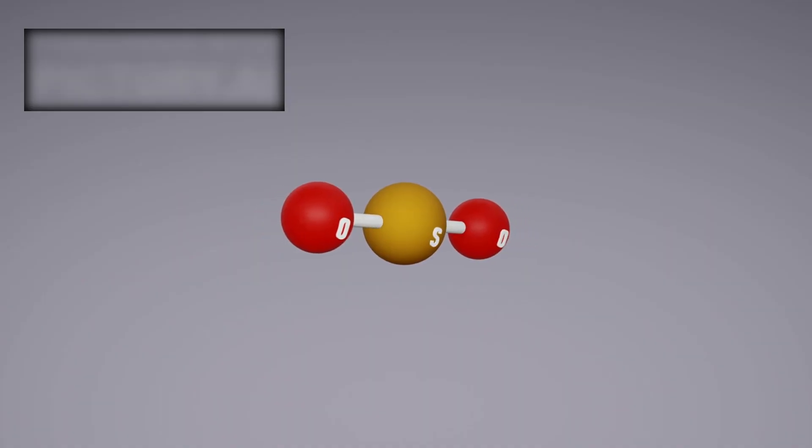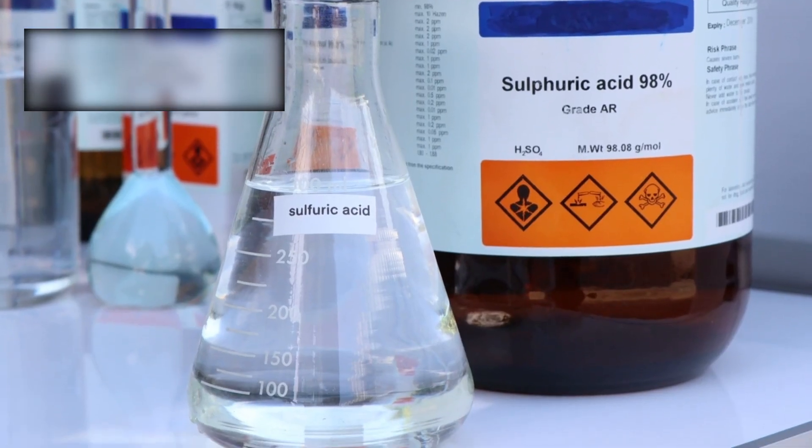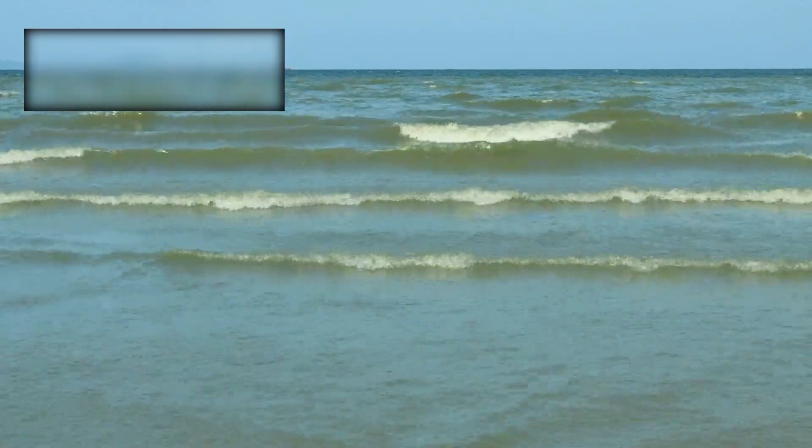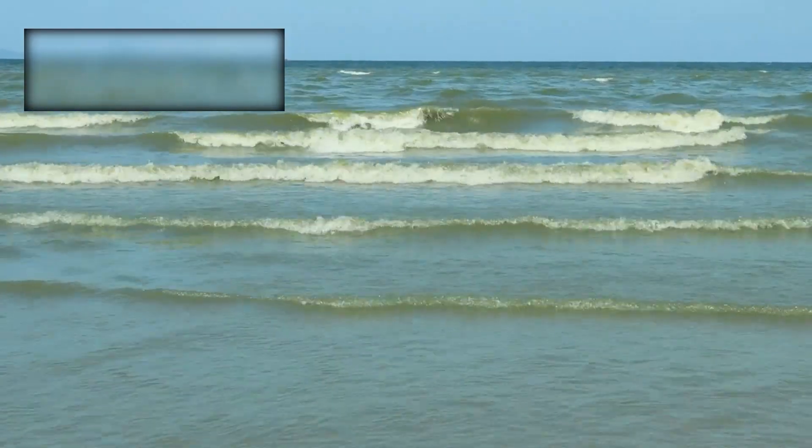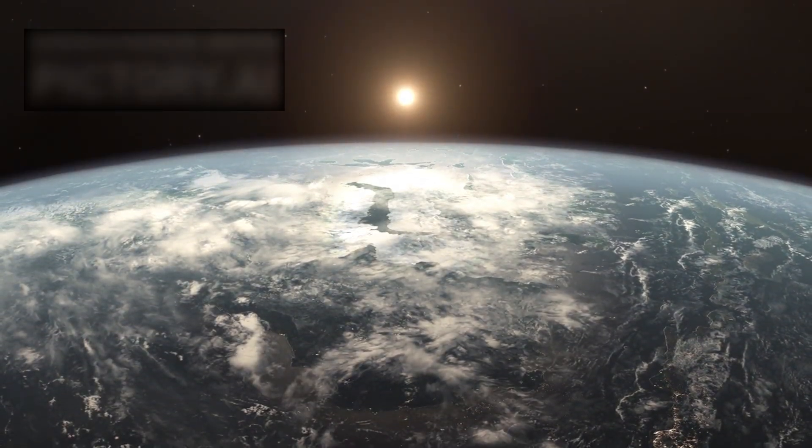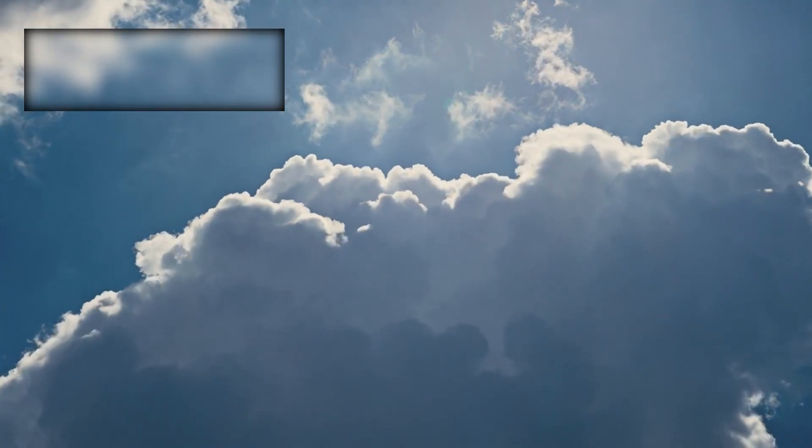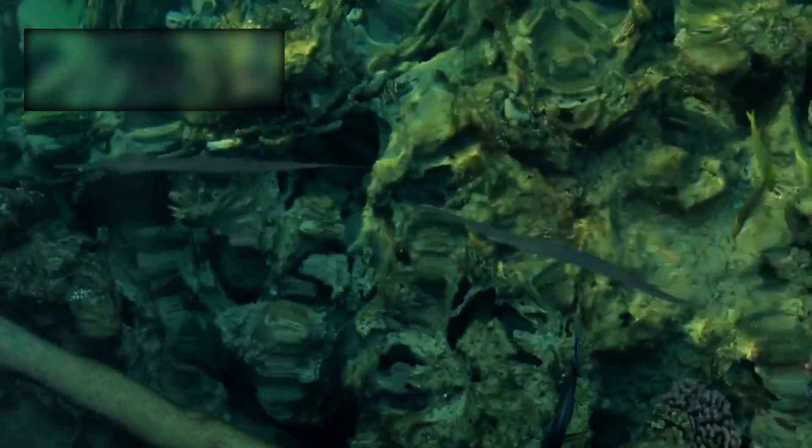And then came the most astonishing clue of all. A faint, tantalizing hint of dimethyl sulfide, or DMS. On Earth, this molecule is rare. It is produced almost entirely by life. Tiny plankton drifting in the oceans release it into the air. If confirmed, this could be the strongest biosignature ever detected beyond our solar system. Imagine it: a planet larger than Earth, cloaked in dense clouds, its alien skies hiding oceans that stretch farther than any we know. And within those oceans, microorganisms drifting in the currents, releasing the very same molecules of life that breathe through our own world.